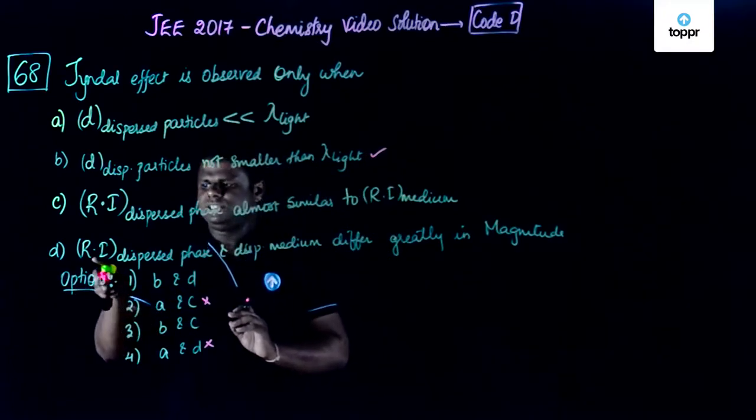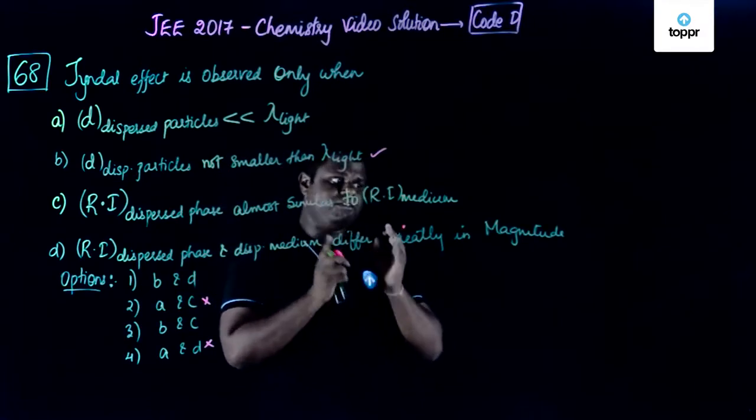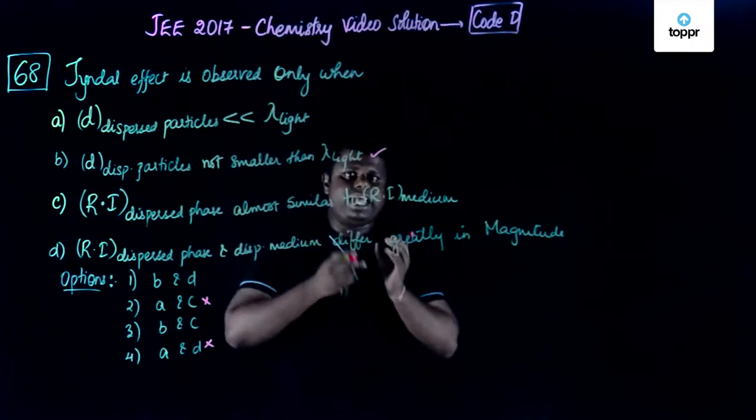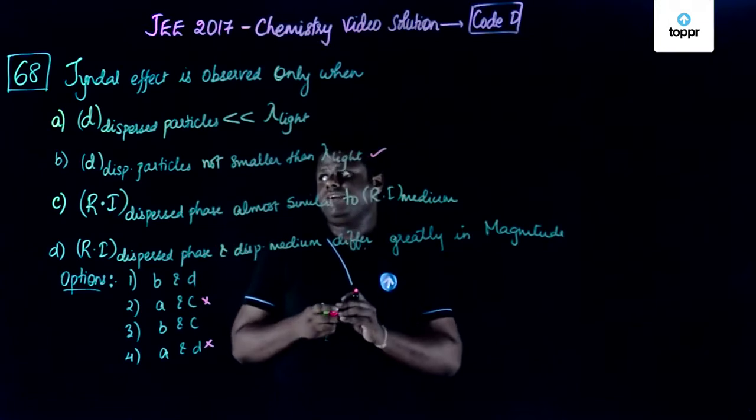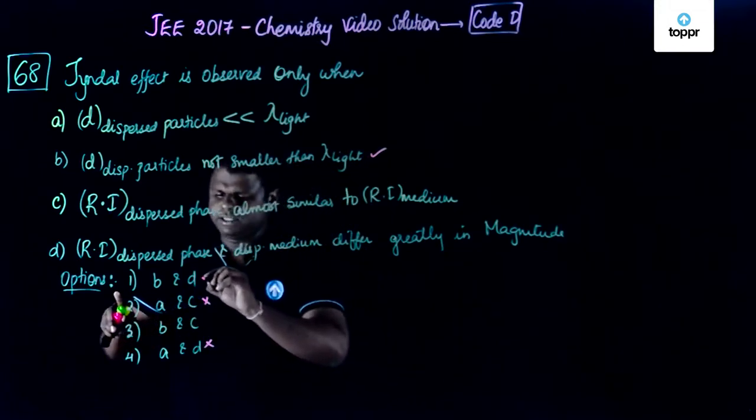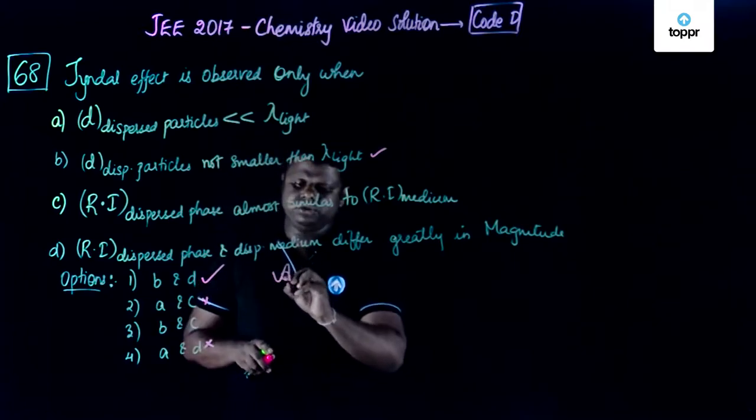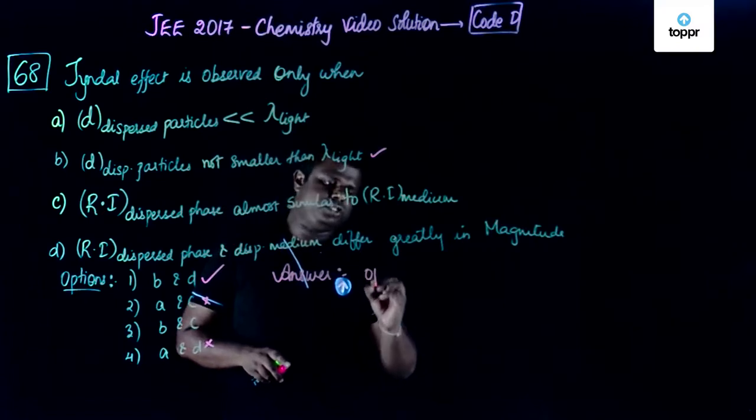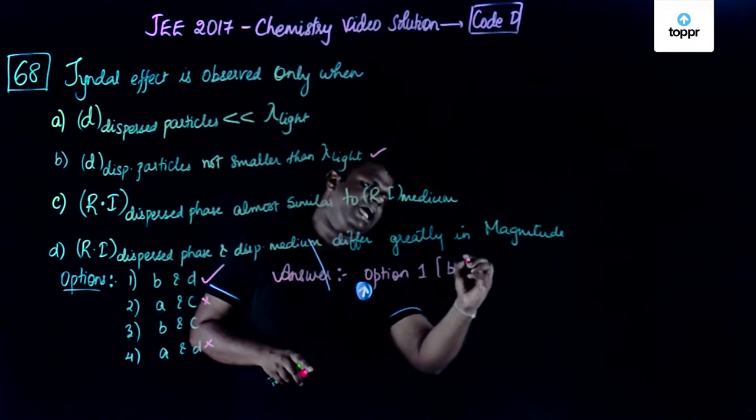The only option you are left with is refractive index of the dispersed phase and dispersion medium - they should differ greatly in magnitude. Then only will the particles be able to scatter light, otherwise the light would pass through and Tyndall effect won't be observed. The correct answer for this question is option number 1, that is B and D. I'm just going to write down the answer - the solution to this question is option 1, that is B and D.